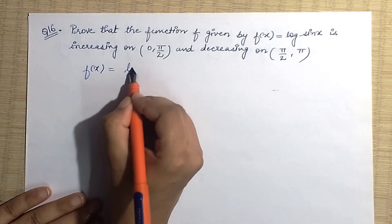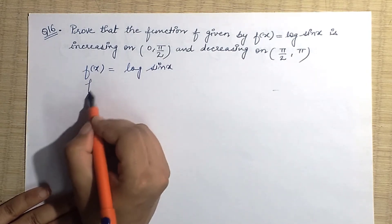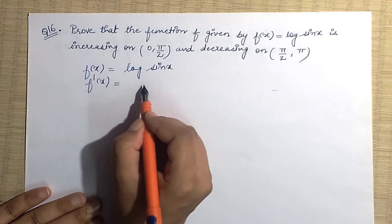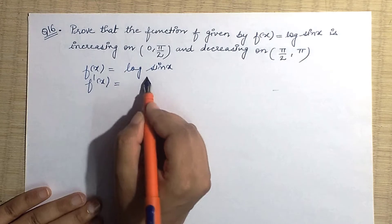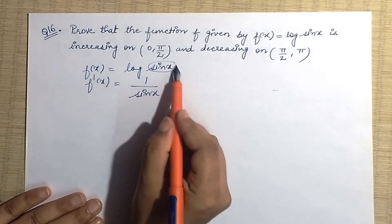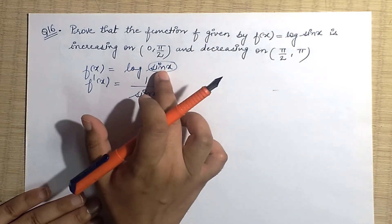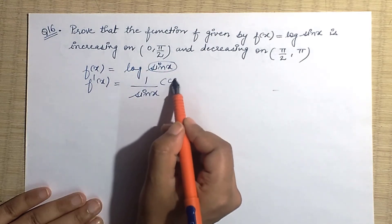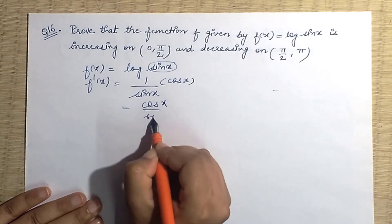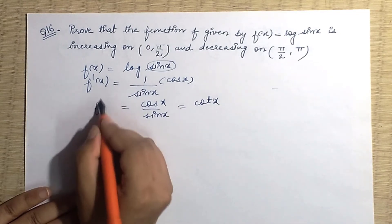First, write down the function — that means f(x) = log(sin x). Differentiating with respect to x: the differentiation of log gives 1 upon sin x, then with the help of chain rule we differentiate sin x, which gives cos x. So the overall function becomes cos x upon sin x, which we can write as cot x.